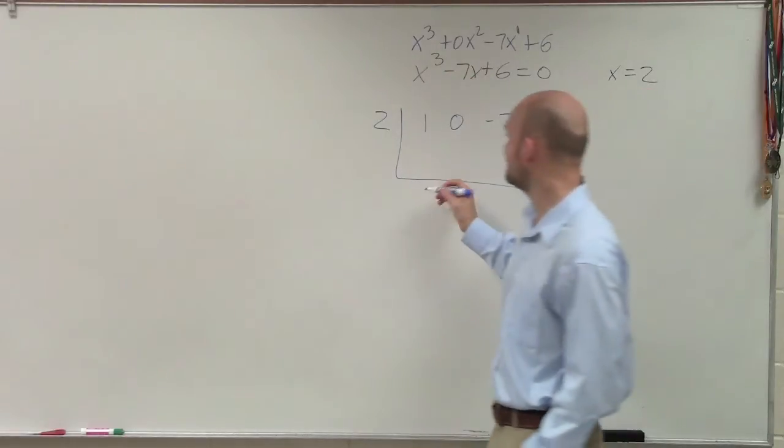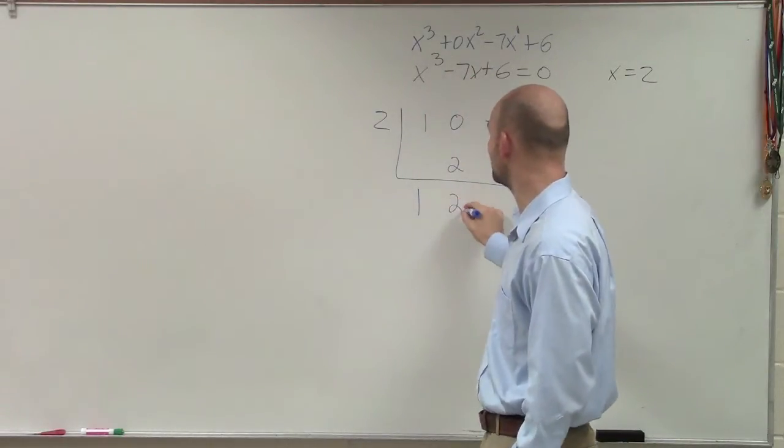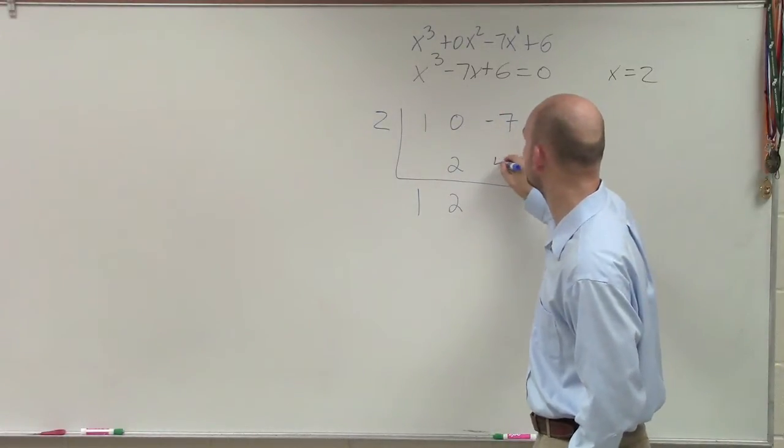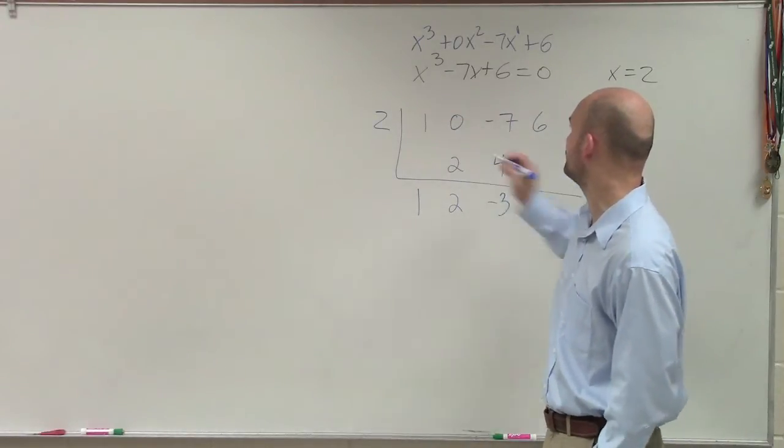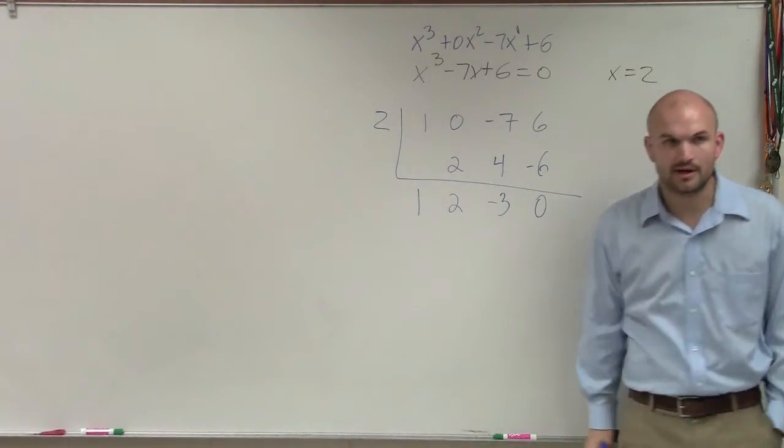So now the first step is you bring down the 1. 1 times 2 is 2. 0 plus 2 is 2. Remember you add vertically, multiply diagonally. 2 times 2 is 4. Negative 7 plus 4 is negative 3. Negative 3 times 2 is negative 6. 6 plus negative 6 is 0.